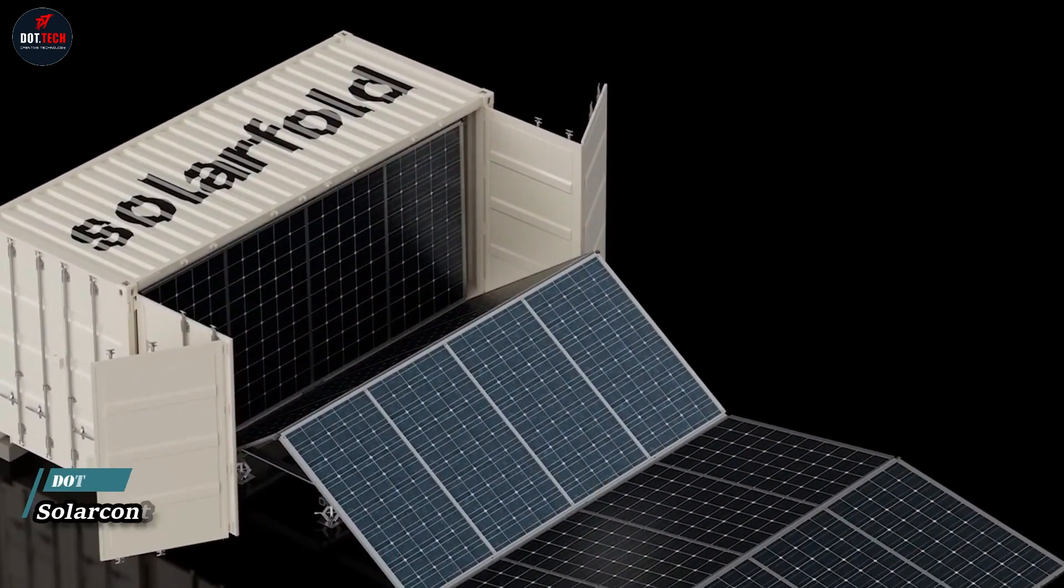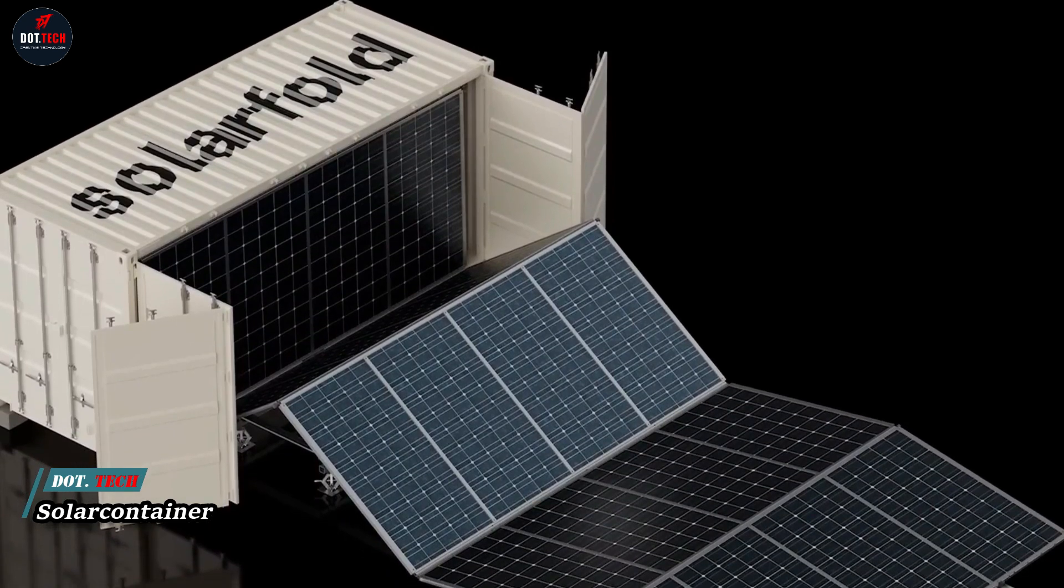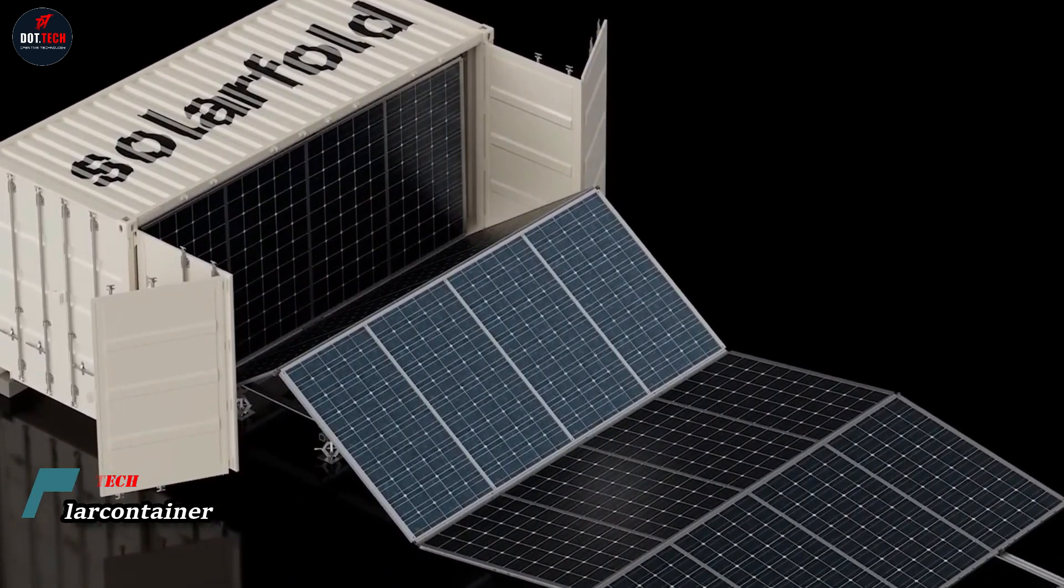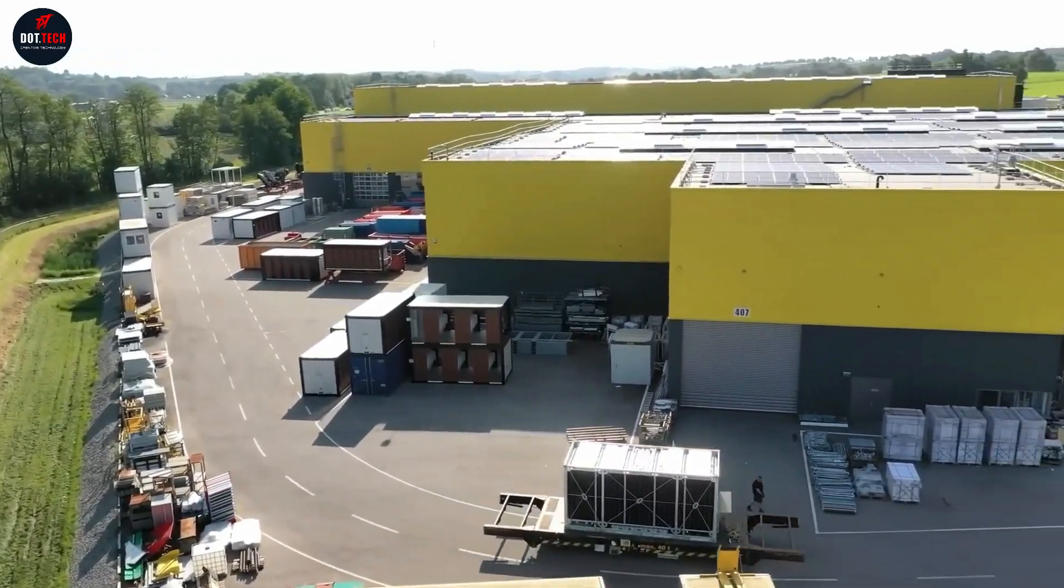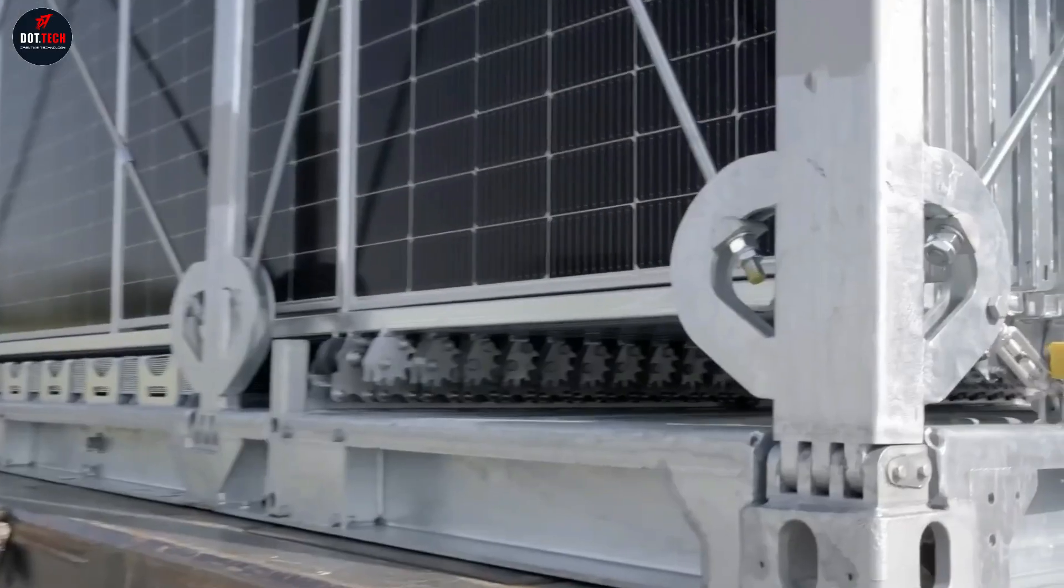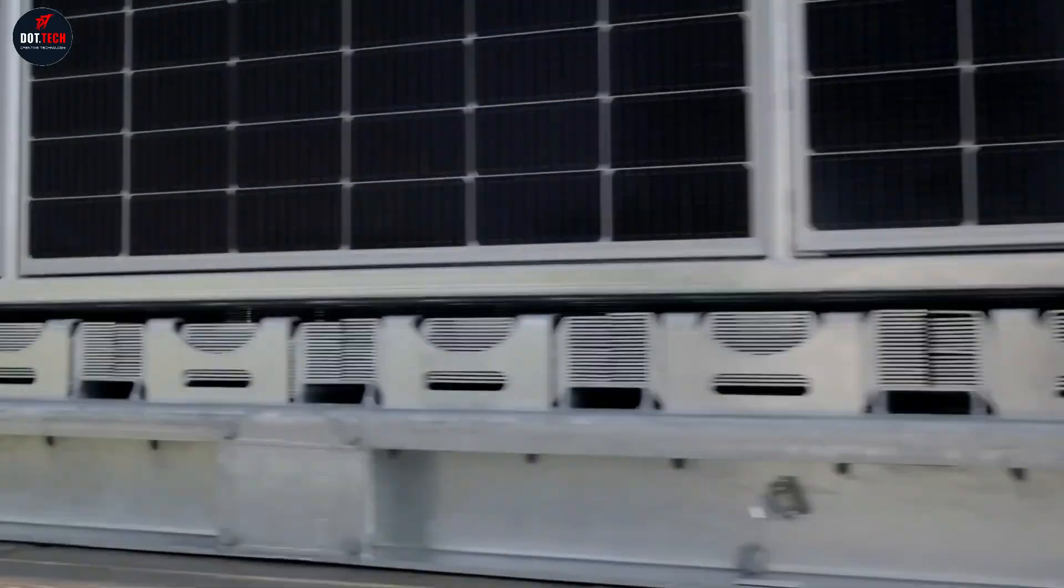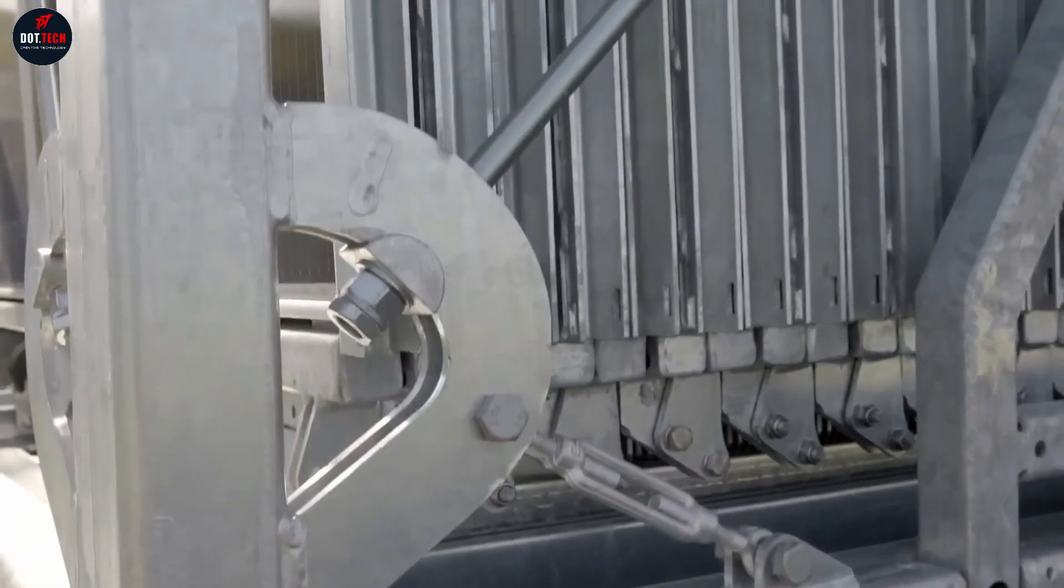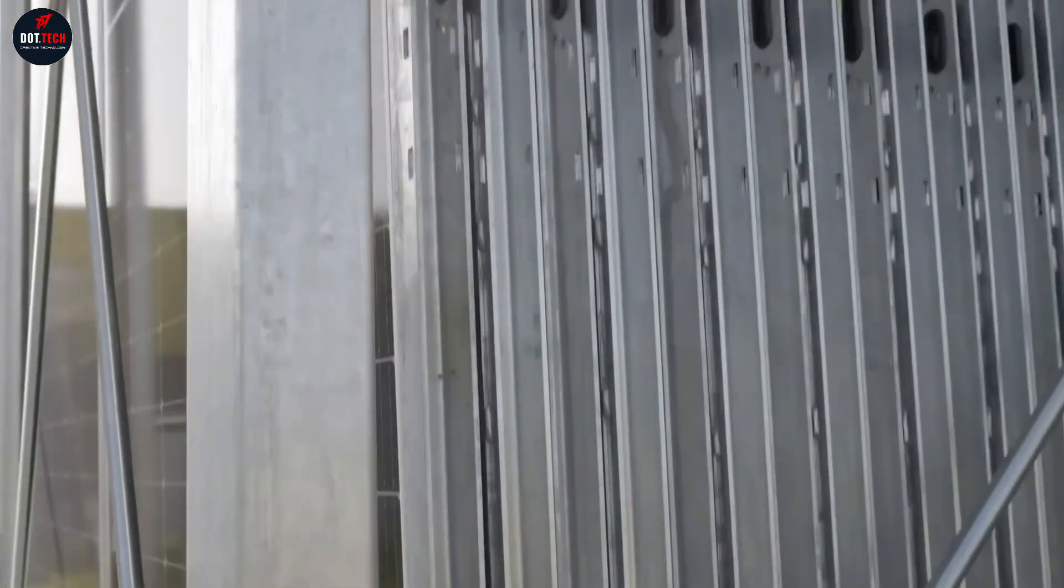The main drawbacks of solar power plants are the complexity of transportation and installation. Engineers at Solar Container have solved both of these problems simultaneously. They have developed foldable photovoltaic modules that can be easily transported and quickly put into operation.